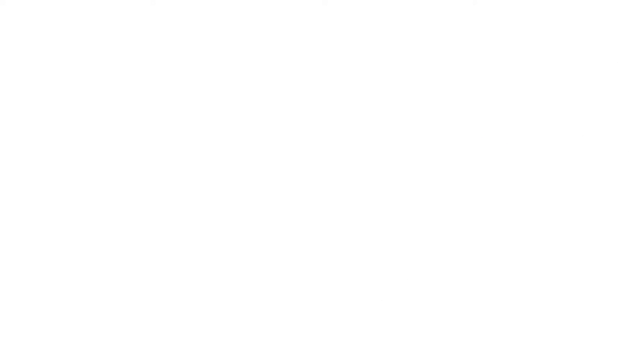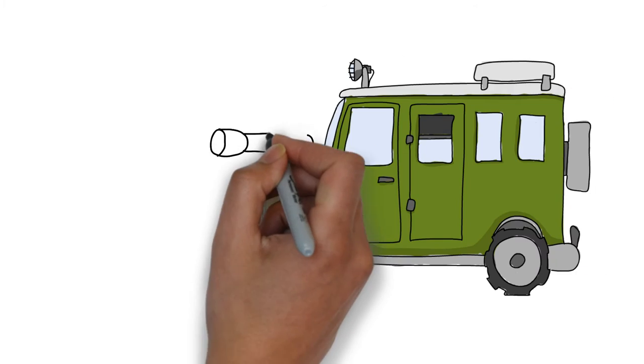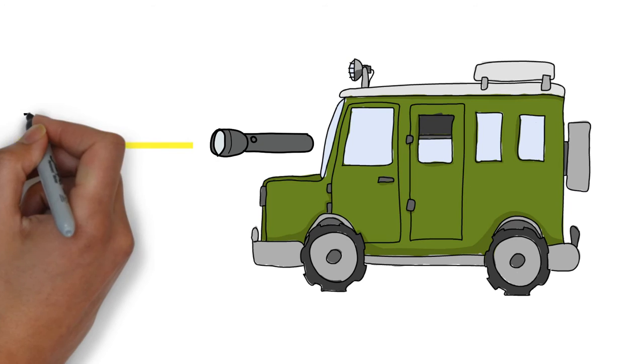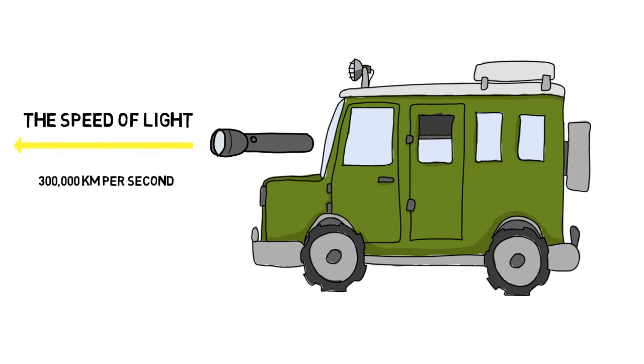As I previously said, if that person turned on a flashlight in the direction the car was moving, the light would not have gone any faster than it normally would have if the car was not moving at all.